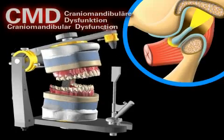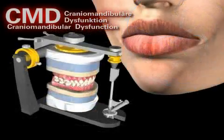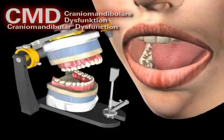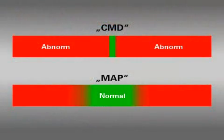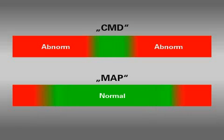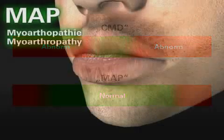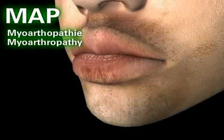By contrast, doctors who use the term CMD frequently treat symptoms but not the actual causes of these symptoms, and treatment often consists of inconsistent therapy concepts. This graphic should help explain the differences. You can clearly see that the area requiring treatment, shown in red, is significantly smaller with myoarthropathy. The diagnostic and treatment indicators are first and foremost determined by the patient, rather than by the treating professional, in MAP.